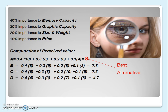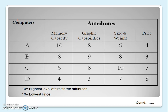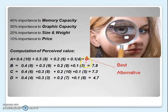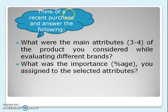To that consumer, memory capacity is most important — he has given 40% importance to memory capacity, 30% to graphic capability, 20% to size and weight, and 10% to price, making price the least important factor. He calculates the perceived value of all four alternatives — A, B, C, and D — by multiplying the importance percentage of each parameter with the score for that parameter. For this customer, the best alternative turns out to be brand A.